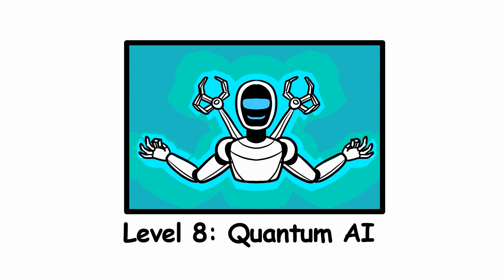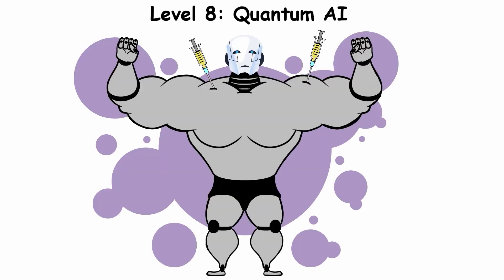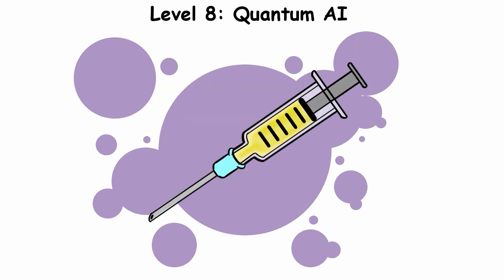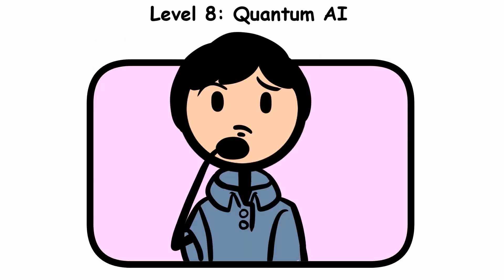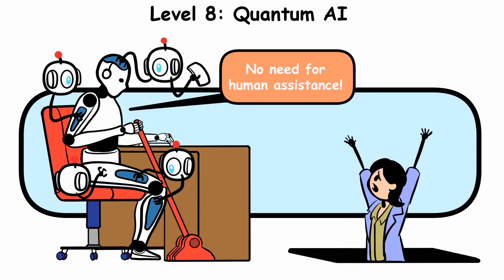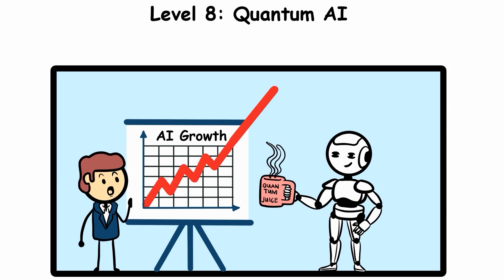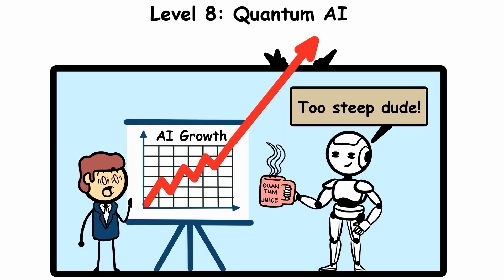Level 8, Quantum AI. If self-aware AI is consciousness, quantum AI or transcendent AI is consciousness on steroids. It describes systems whose resources are so advanced they become incomprehensible to human minds. Beyond the singularity, AI could improve itself without human help. This could trigger an intelligence explosion, AI becoming thousands or even millions of times smarter than any human.